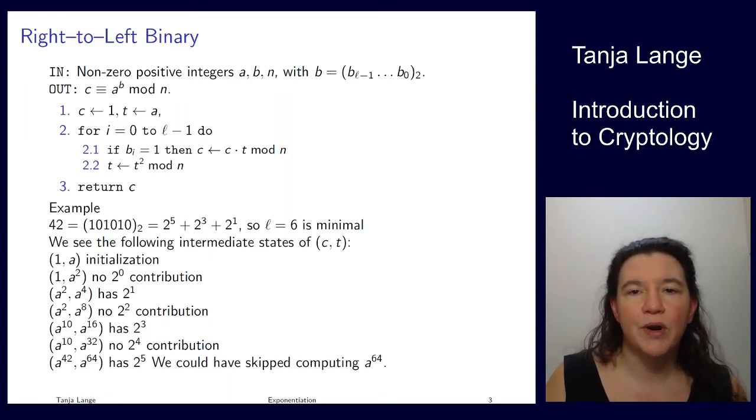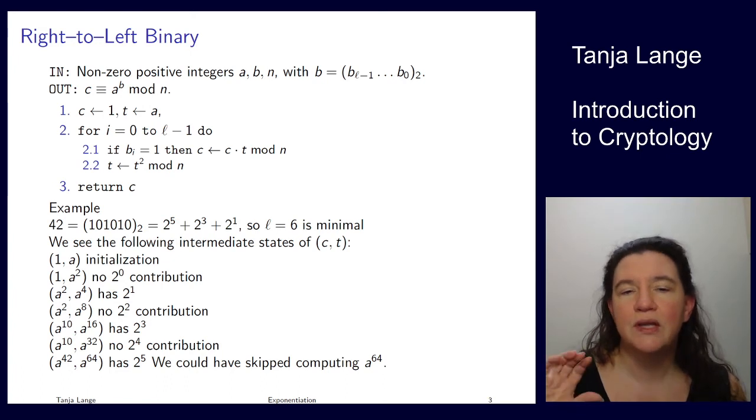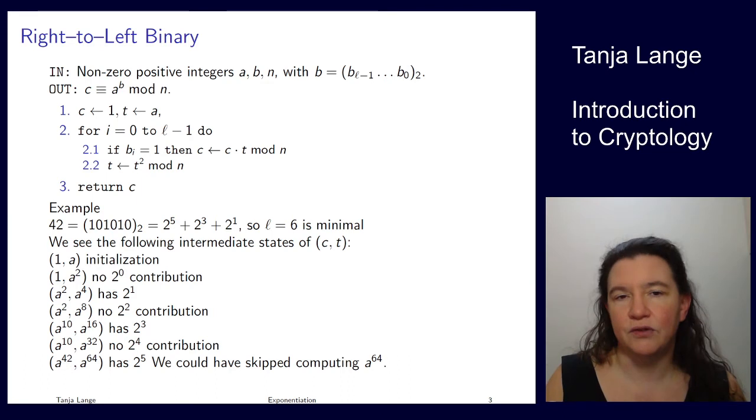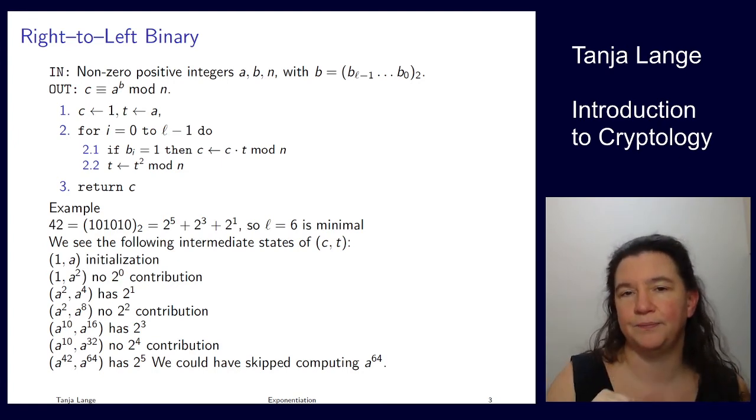And at every step we're doing squaring of some intermediate result. And depending on whether a bit in b is set or not we're doing a multiplication. Now the one squaring per step and doing multiplication if a bit is set is the same also in the other direction. So there is no difference in the expense of these two methods. But in the left to right method we're going to start at the top bit, so at b_l minus 1, and going down to the b0, the rightmost bit.